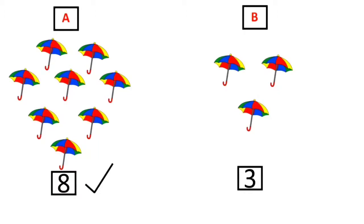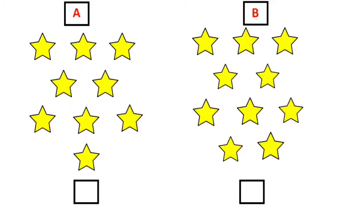Okay. Let us move on to the next one. Let's start counting the stars present in each set. First we will count set A. 1, 2, 3, 4, 5, 6, 7, 8 and 9.